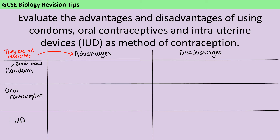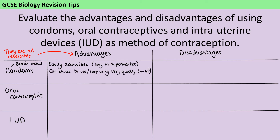The major advantage of condoms is their accessibility — you can go to the GP, you can go to the GUM clinic, or you can just buy them yourself from a supermarket. Another big advantage is that it's really easy to choose to start using them or stop using them depending on whether or not you actually want to have a baby. So if a couple decide that now they are ready to have children, they can just immediately stop using condoms and would be able to conceive. A third big advantage is that they also protect you from STDs, particularly if you're in a relationship with a new partner or if you have multiple partners.